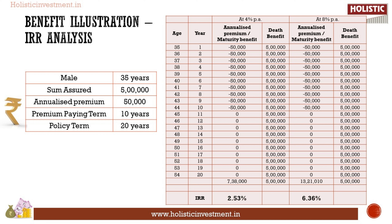These are not guaranteed and they are not maximum or minimum returns. There are several factors like future investment performance that affect your returns. Under the assumed rate of return of 4%, the fund value at the end of 20 years is Rs. 7.38 lakhs and the IRR is 2.53%. Under the assumed rate of 8% return, the fund value at the end of 20 years is Rs. 13.21 lakhs and the IRR is 6.36%. MaxLife Online Savings Plan is a market-linked return, but the IRR calculated in the above scenarios is far lower than debt instrument returns. A long-term investment fetching lower returns will affect your financial goals.